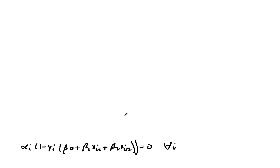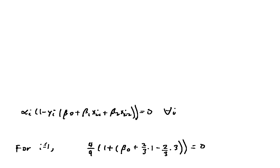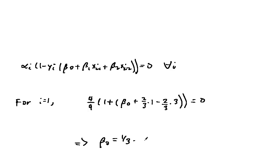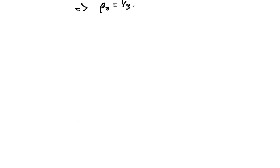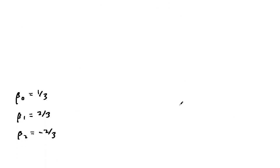By complementary slackness, alpha i times this expression equals 0 for all i. For i equals 1, we get this, and solving for beta0 we get 1/3. So beta0 is 1/3, beta1 is 2/3, and beta2 is negative 2/3.